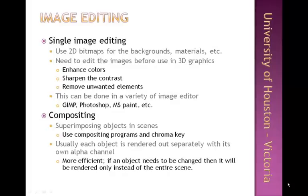Now that you know what bitmap images are and how they're represented, note that we can use them for backgrounds, maps, materials, and texture maps applied to the surfaces of our 3D objects. You can create these bitmaps from scratch, download them from the web, or take a picture with a digital camera. Once you have them, you'll need to edit these bitmap files to enhance colors, sharpen contrast, or remove unwanted elements.